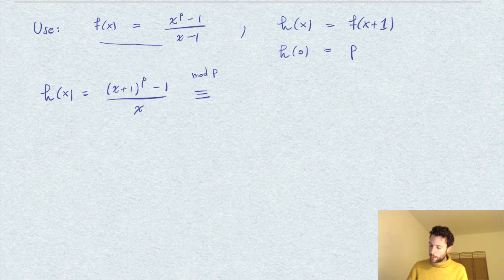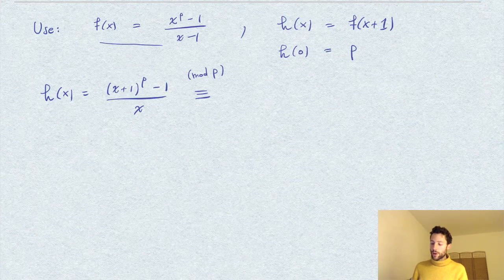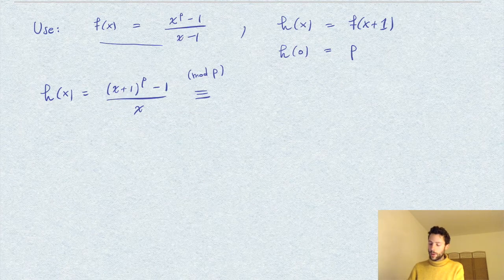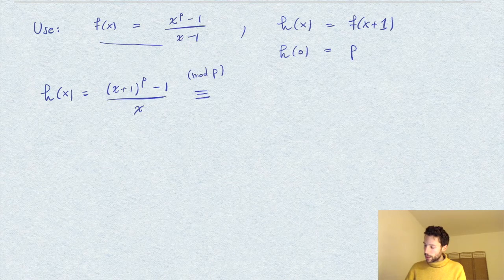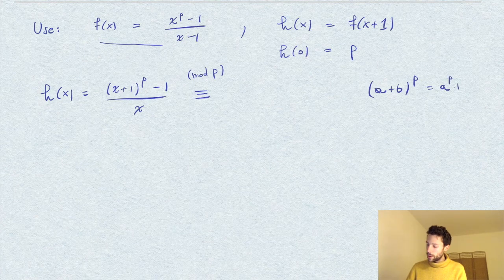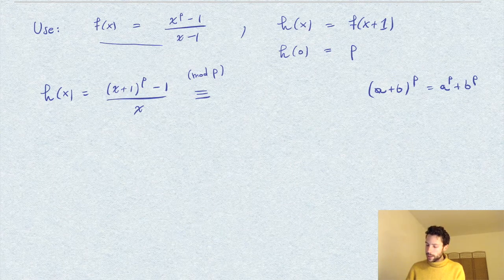So I do a modulo p reduction here. And if you know that in characteristic p—so in Z mod p—we always have an identity: a plus b to the power p is equal to a to the power p plus b to the power p. Well, if you know this, then this expression is very easy to reduce.